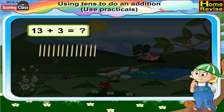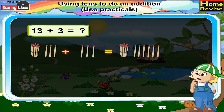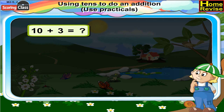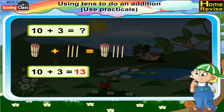First we'll take 13 matchsticks. Make a bundle of 10 matchsticks, which is a 10, and 3 more matchsticks with it makes it 13. If we add 3 more matchsticks to it, that will be 16 matchsticks. So 13 plus 3 is equal to 16. Now, 10 plus 3 is equal to 13. Let us take 10 matchsticks, make a bundle of 10, and add 3 more matchsticks to it, so that will be 13. 10 plus 3 is equal to 13.